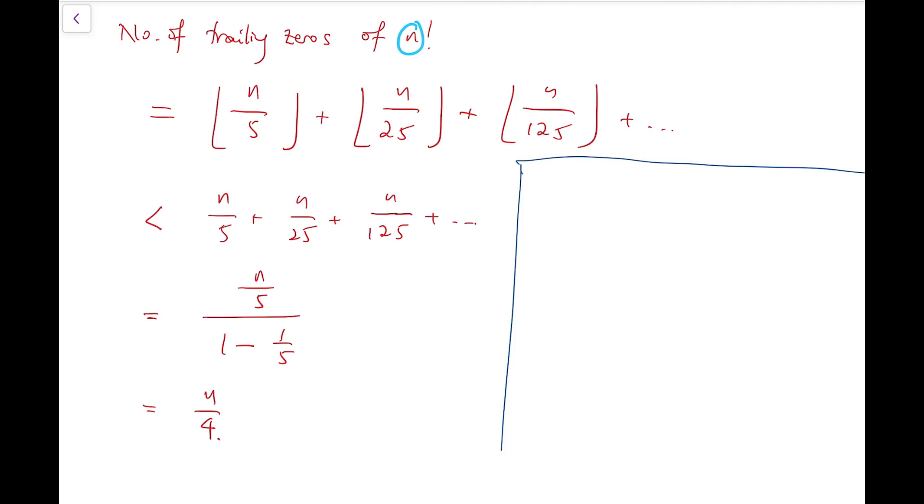Now, we know that we want this thing to be 10,000, and in fact, it's smaller than this n over 4. So, therefore, we know we can say that n over 4 is greater than 10,000. So, that means the n that we want must be at least 40,000.